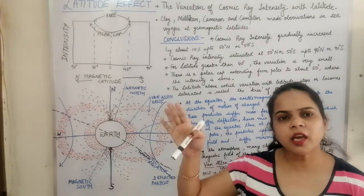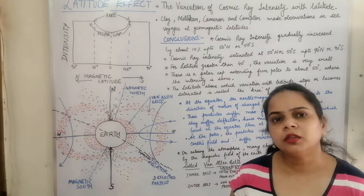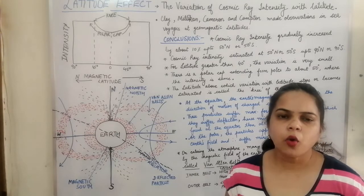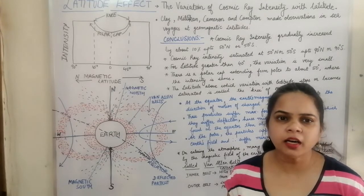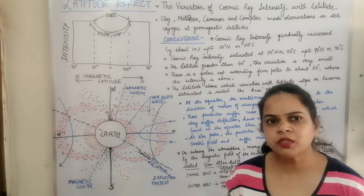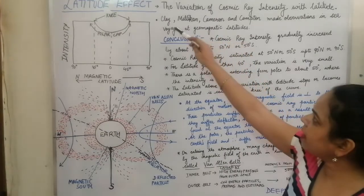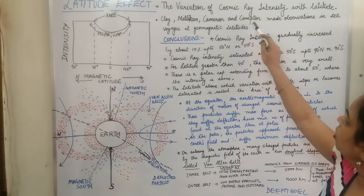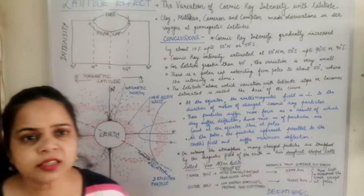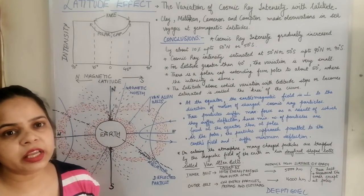What they saw was that when the gold leaf electroscope was placed at different latitudes of the earth, they observed how the gold leaf electroscope discharged — whether there was any variation, increase or decrease with respect to different latitudes. Clay, Millikan, Cameron, and Compton made certain sea voyages at different latitudes to observe the discharge of the gold leaf electroscope.